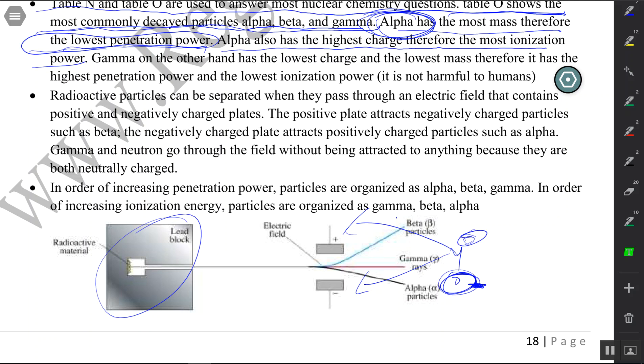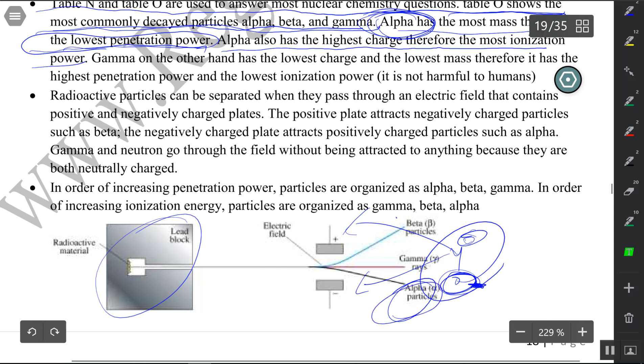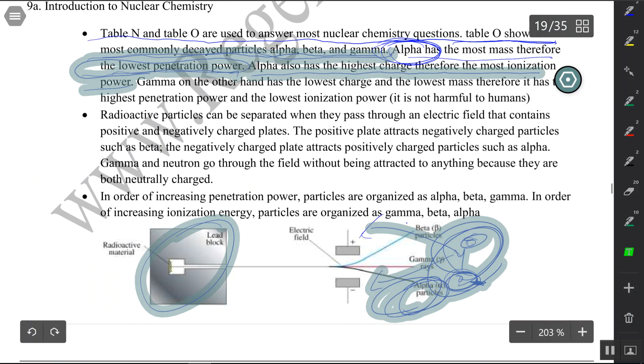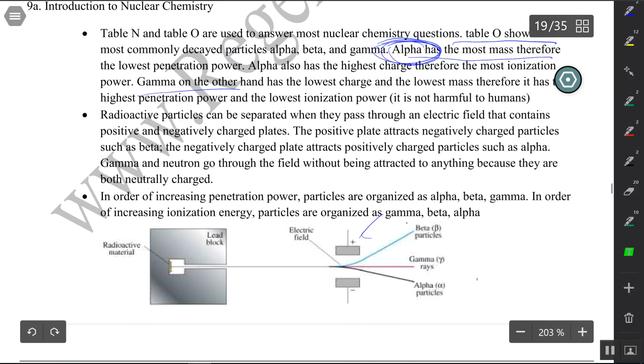So in conclusion, alpha is the most harmful and gamma is the least harmful. Alpha has the lowest penetration while gamma has the highest penetration. You can read more about this.